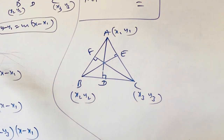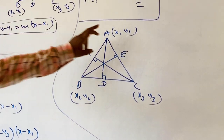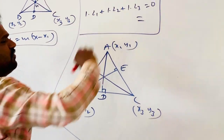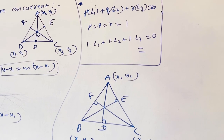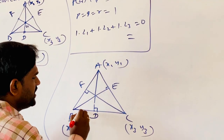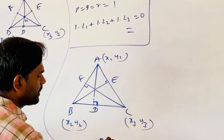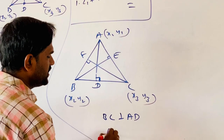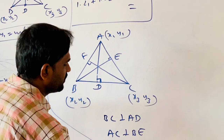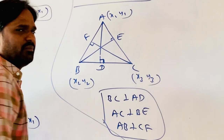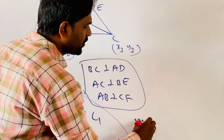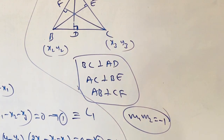Similarly, we find the equations of AD, BE, CF and then by adding the three using this condition we get equal to 0, proving they are concurrent. Here D is not a midpoint — instead we have the perpendicularity condition: BC is perpendicular to AD. When two lines are perpendicular, the product of their slopes equals −1: M1 · M2 = −1. So if we find the slope of BC, then M2 = −1/M1 gives us the slope of AD.